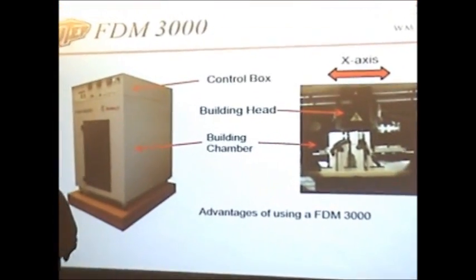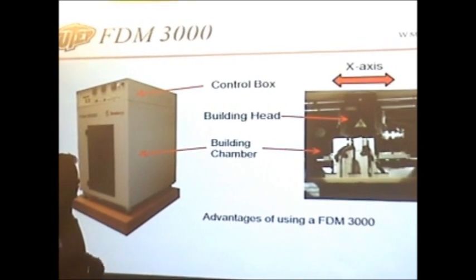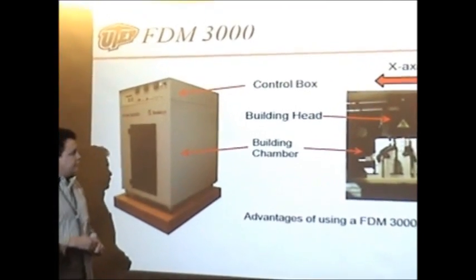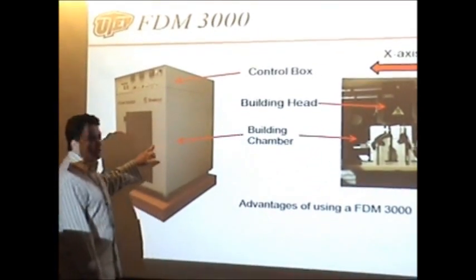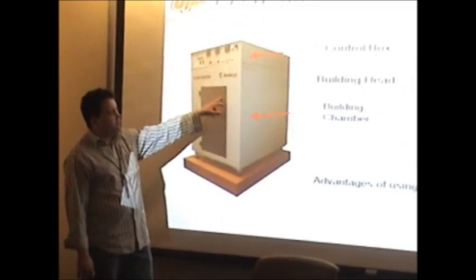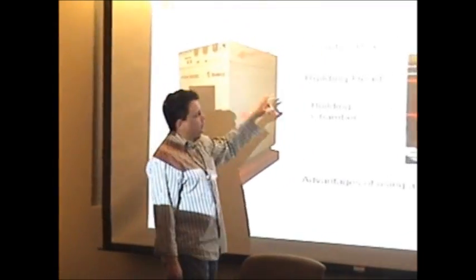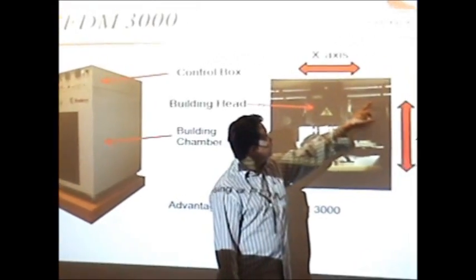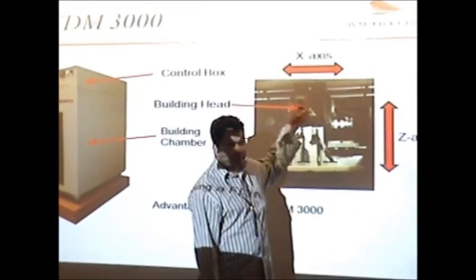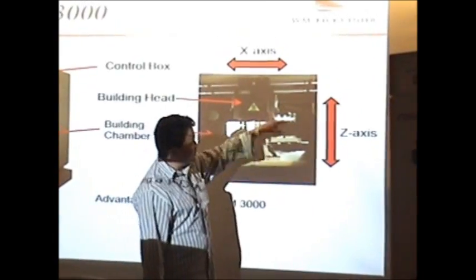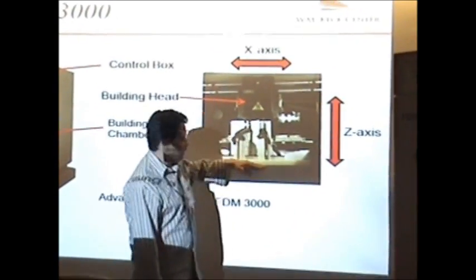So the FDM machine that you see here has a couple of main parts. You see you have a building chamber, which I gave you the dimensions, 10 by 10 by 18. And then also you have an X-axis controller here that moves in the X direction, and then another one in Y direction, and then you have the Z axis that moves the platform up and down.